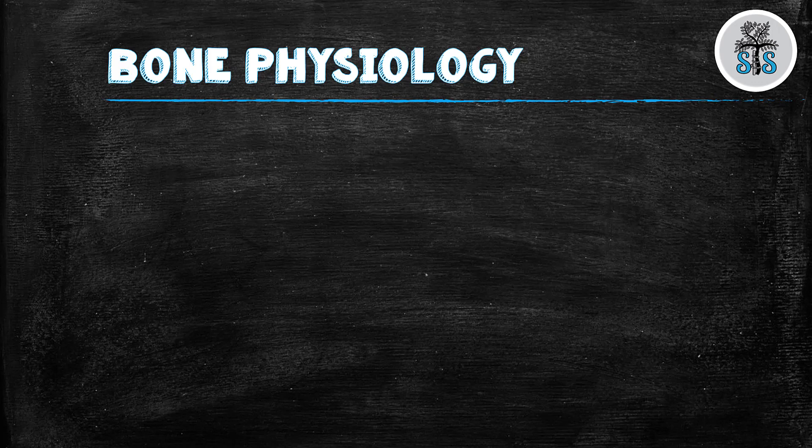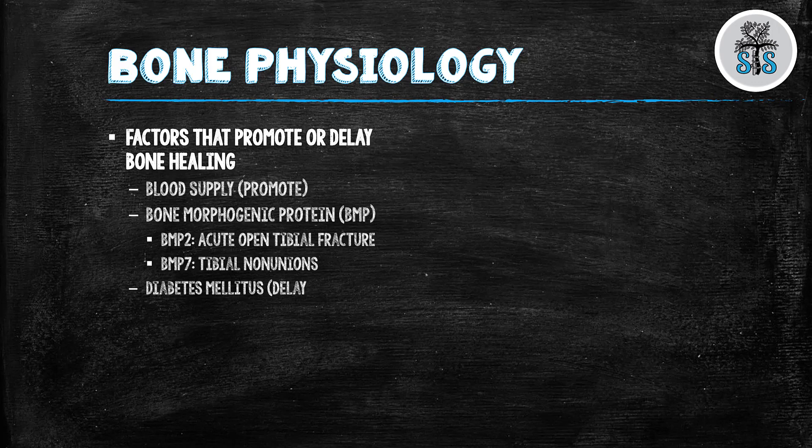Bone physiology is a broad topic, but let's touch on a few important things. Factors that promote or delay bone healing: you need a good blood supply — hypertrophic non-union has good blood supply, while atrophic non-union does not. Bone morphogenic protein is another factor; your body naturally makes these, but they can also be supplemented into fracture sites. BMP-2 is put into acute open tibial fractures, and BMP-7 into tibial non-unions — both shown in studies to help promote healing. However, diabetes, steroids, and smoking are all factors that delay bone healing.